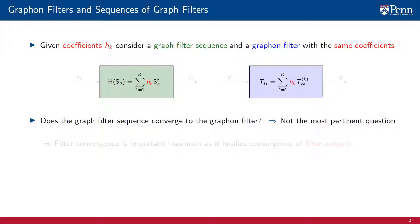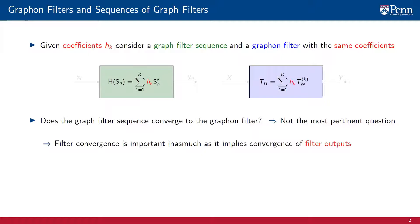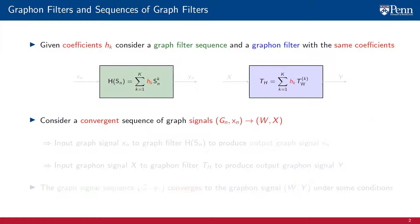The question we address here is: does the graph filter converge to the graphon filter? This is a good question and we are going to provide a response, but it is not the most pertinent question. Filters are used to process signals. Thus, filter convergence is important only inasmuch as it implies convergence of filter outputs. A more pertinent question is consequently whether graph filter outputs converge to graphon filter outputs.